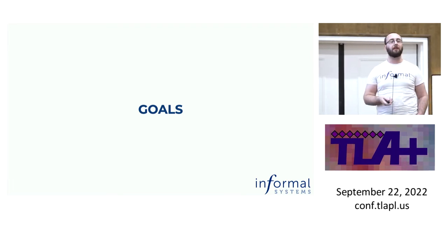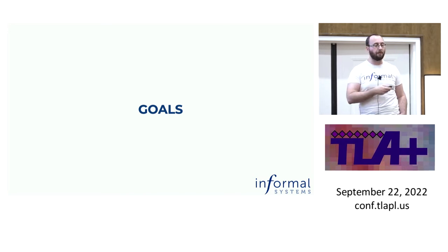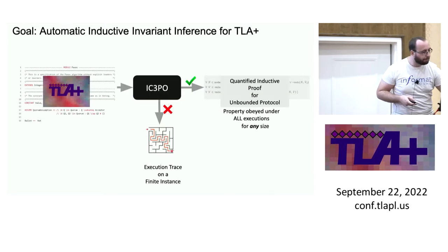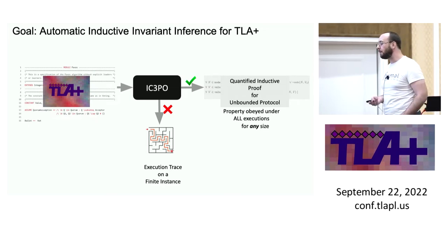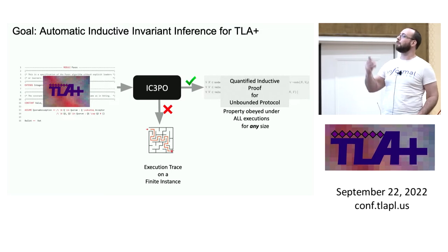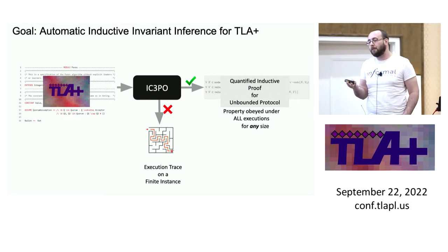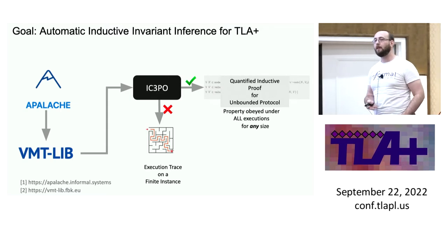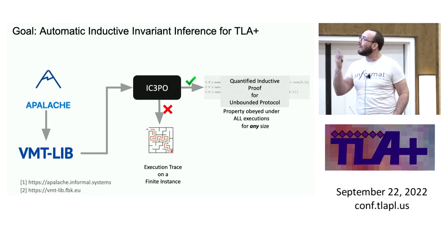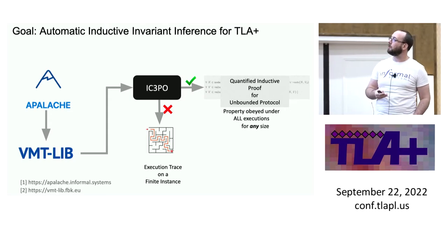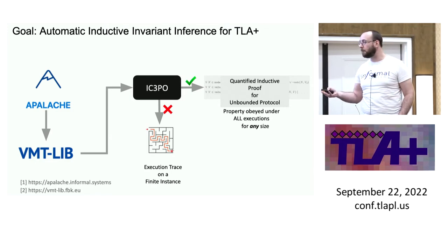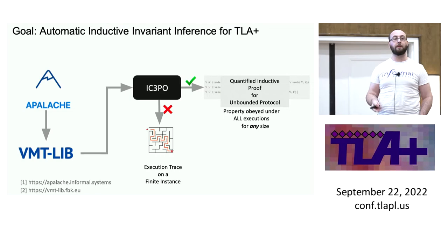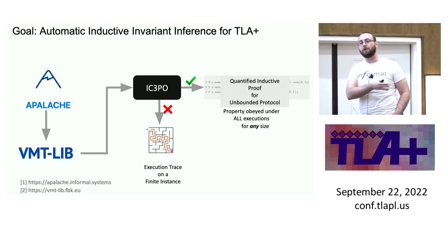Karem and Aman approached us. They had this technique, IC3PO, which needed VMT files — it needed Ivy translated into VMT. The question was: can we make it work with TLA as an input language? They wanted to use TLA+ instead of Ivy. You can't just plug in TLA+ because the question is how do you turn TLA+ into VMT. Enter Apalache — Apalache already translates TLA+ into SMT. So the question was: can we come up with an automatic translation using Apalache from TLA not to SMT but to VMT, and then plug that back into IC3PO, getting all the proving power of IC3PO for the original source TLA file?